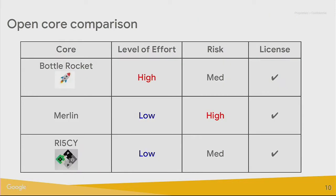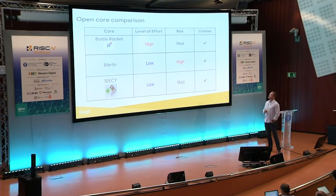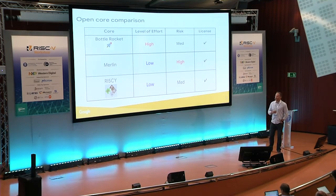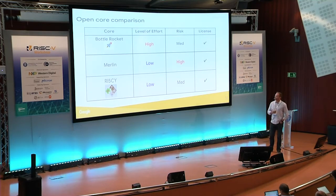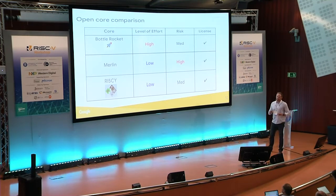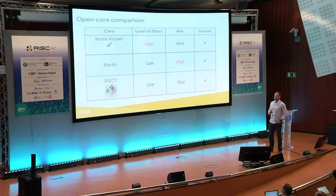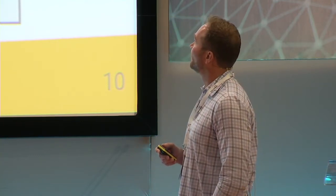This chart represents our comparison. Bottle Rocket we considered had a high level of effort — the PhD student who built it came from Berkeley and was quite familiar with Scala, Chisel, and Rocket Chip, but the rest of our team was not. The risk we considered medium, since Rocket Chip has been extensively used and tested. Bottle Rocket is released under Apache 2.0, as is Rocket Chip, so that checked the license box.